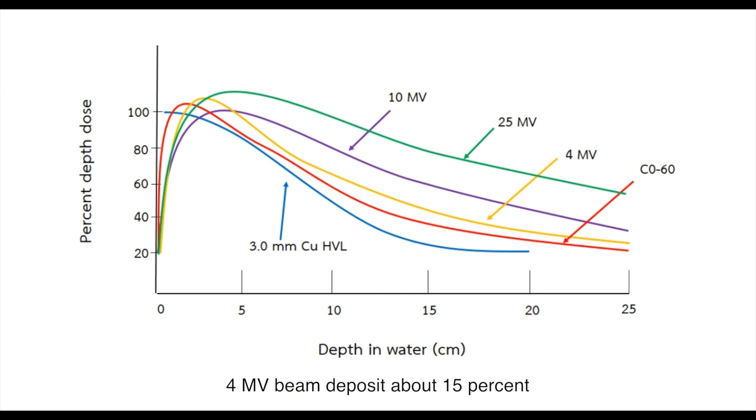A 4 megavoltage beam deposits about 15%, and a 10 megavoltage beam deposits about 10% of the dose at the surface. The majority of surface dose in these high energy beams is due to electron contamination.